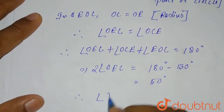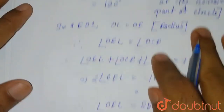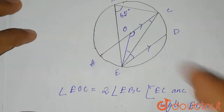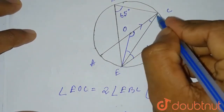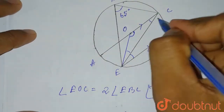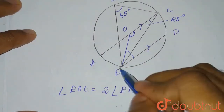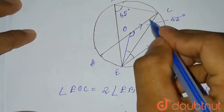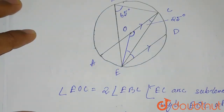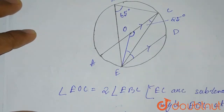Therefore, angle OEC equals 25 degrees. So angle OEC is 25 degrees, and similarly angle OCE is also 25 degrees. Now we can see that AC is parallel to ED and CE is the intersecting line, meaning they form alternate angles.